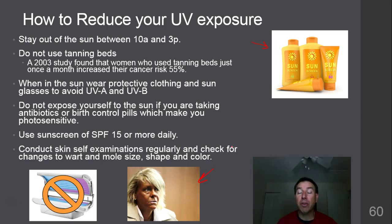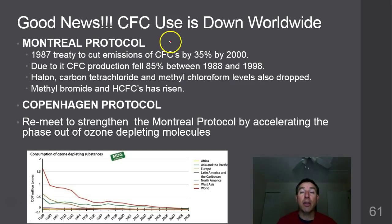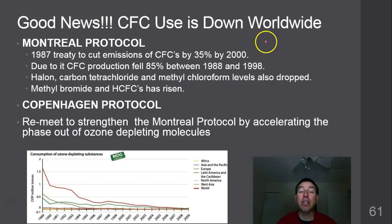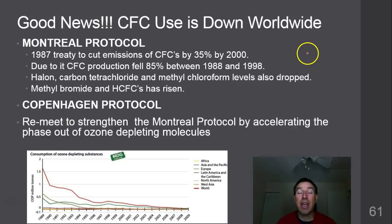Now there is some good news about ozone — it's rare to find good news in this class, but the world got together and recognized the problem of ozone thinning. In 1987, a group of nations met in Montreal and formed the Montreal Protocol, with the goal of cutting CFC (chlorofluorocarbon) emissions by 35% by the year 2000. Because of this, CFC production fell by 85% in approximately 10 years. CFCs used to be found in hairspray, spray paint, and anything in a can that sprayed, and that use has really dropped.